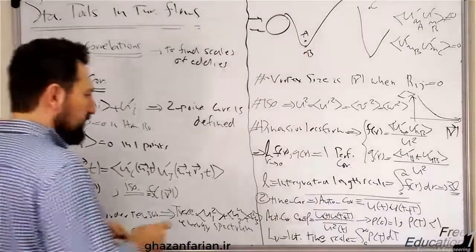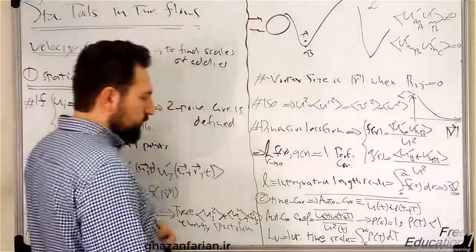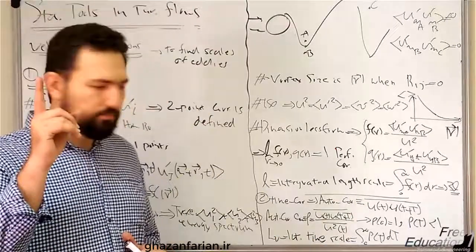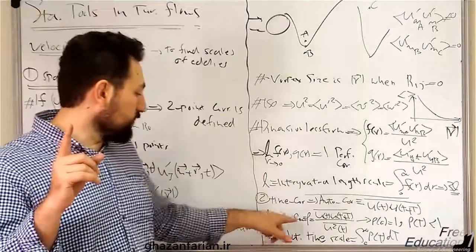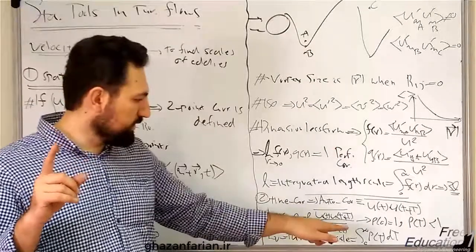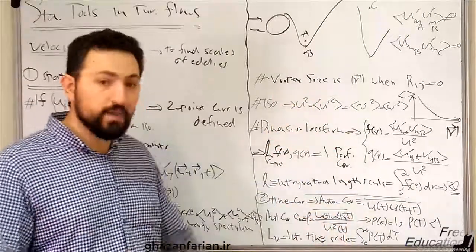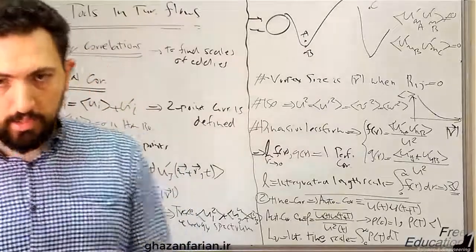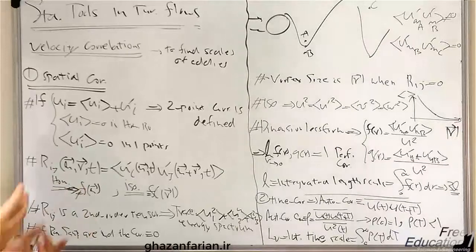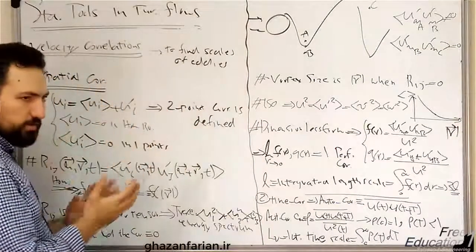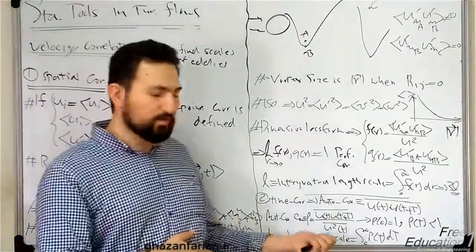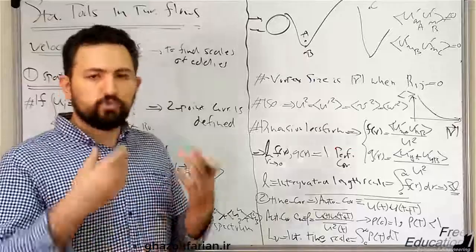Similar to the integrated length scale, we can define the integrated time scale: the integral of the normalized autocorrelation coefficient ρ(t) from zero to infinity with respect to time t. The two concepts are very similar to each other, but the integrated length scale is related to the spatial coordinate and the spatial scale of the problem, while the integrated time scale is related to the time scale of the turbulent flow.